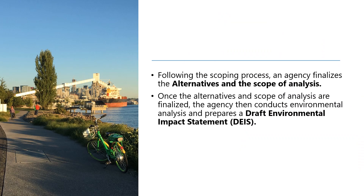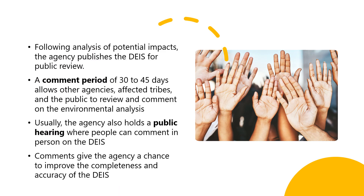Following the scoping process, an agency finalizes the alternatives and the scope of analysis. Once finalized, the agency then conducts environmental analysis and prepares a Draft Environmental Impact Statement, or DEIS. Following analysis of potential impacts, the agency publishes the DEIS for public review.